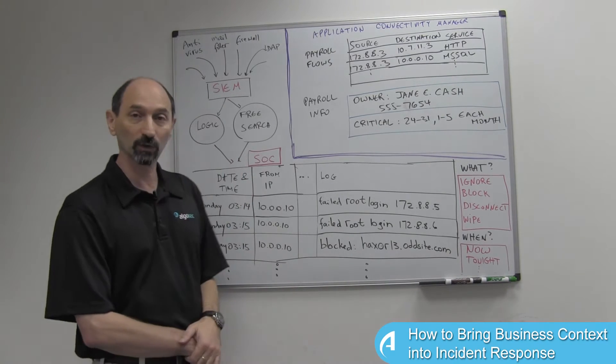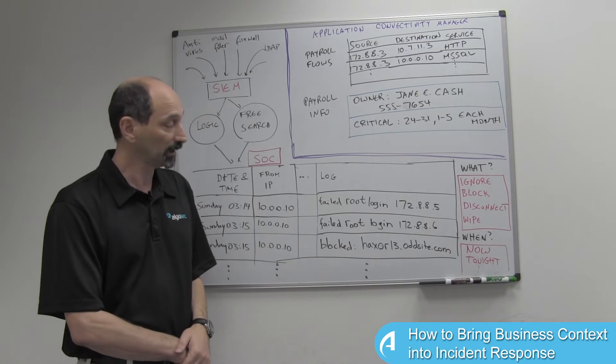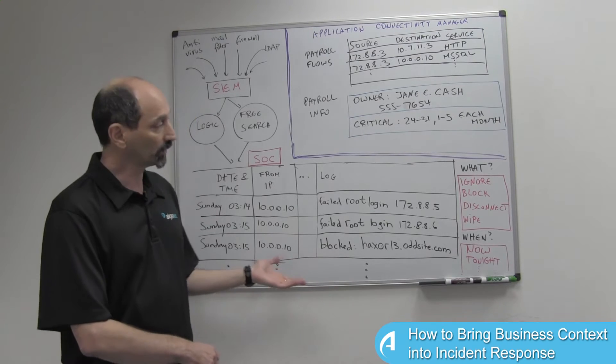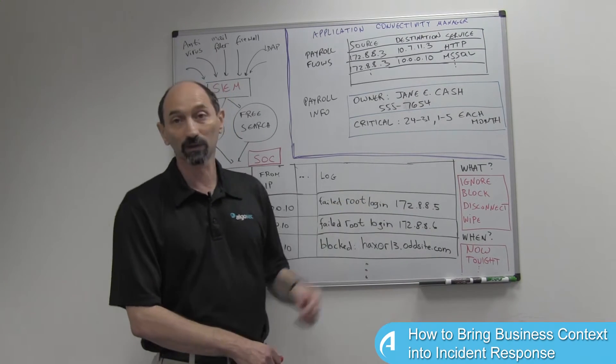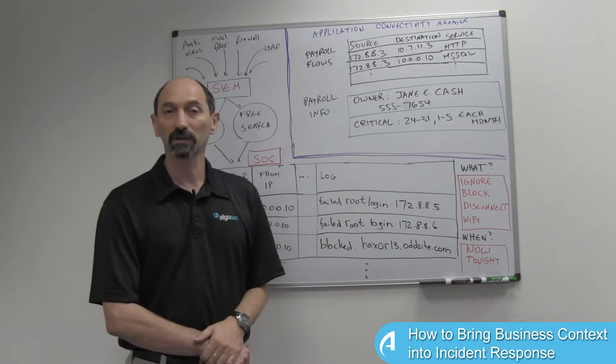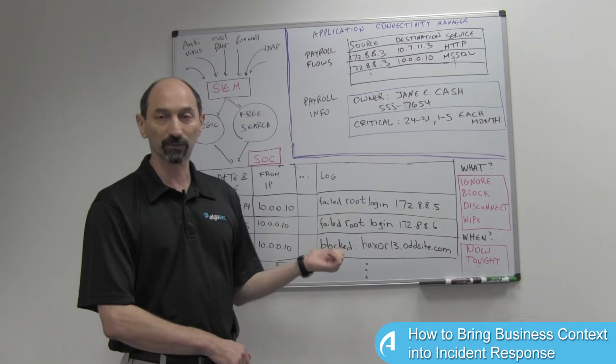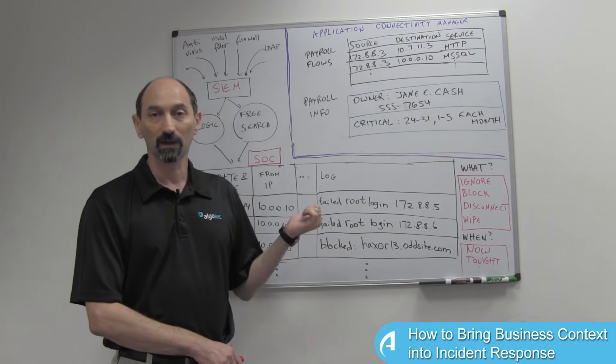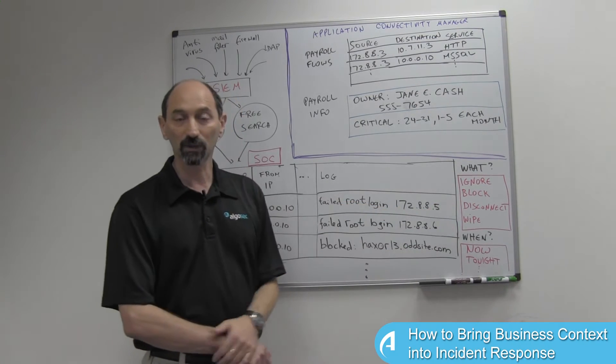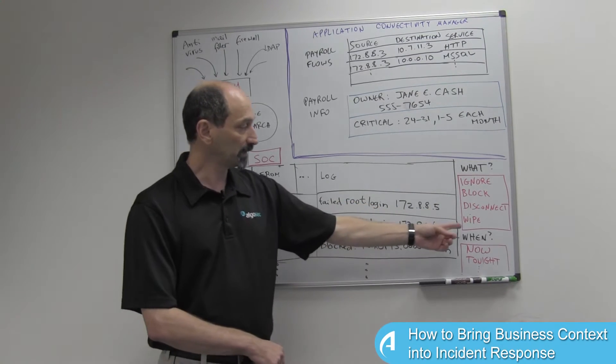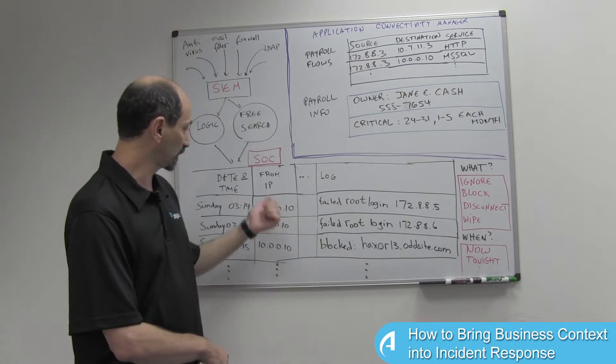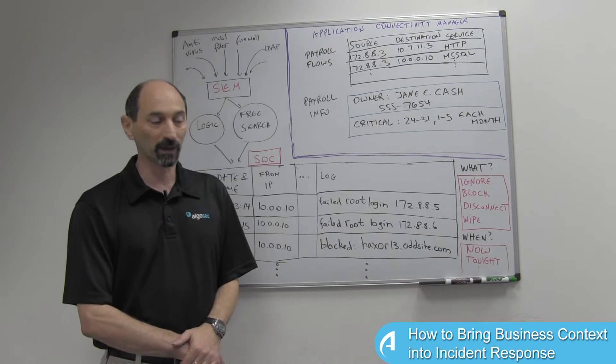The people in the security operations center need to decide what to do about it. They have a variety of choices available to them. They could decide for instance to ignore all of this because maybe it's a false alarm, or they could decide to take a blocking action, basically disconnect the server or the desktop using a firewall or network filter, maybe physically disconnect it from the wire or power it down, or maybe schedule a disk wipe and restore from backup because apparently the system is owned by malware of some sort.